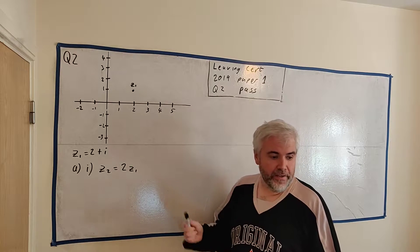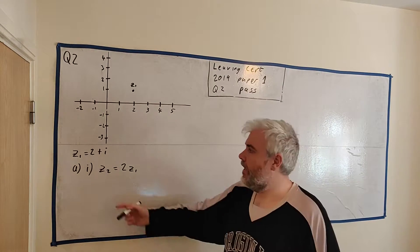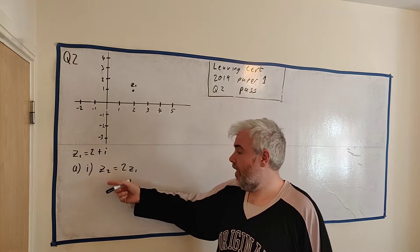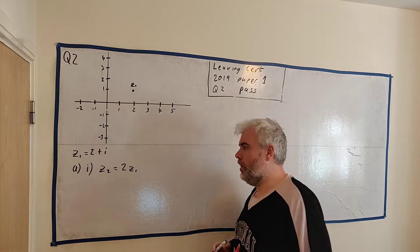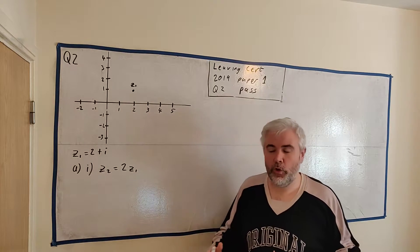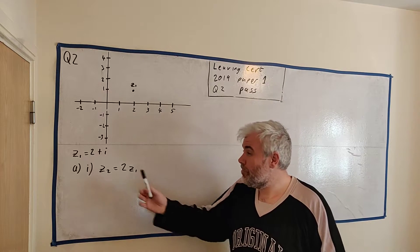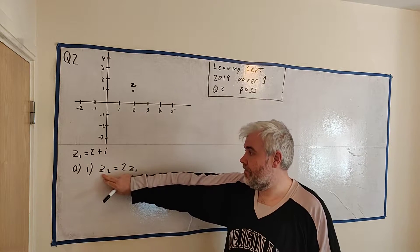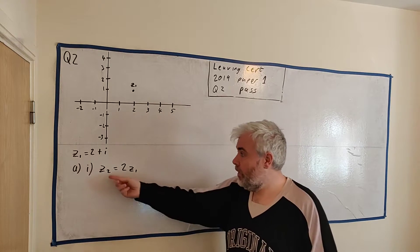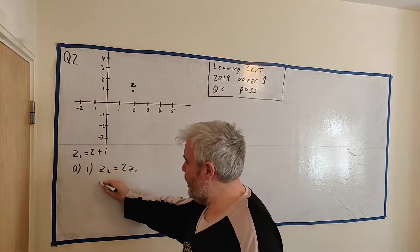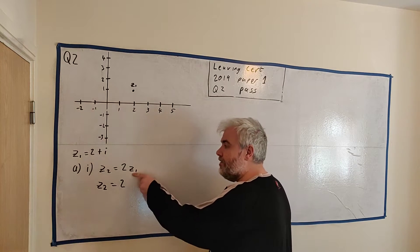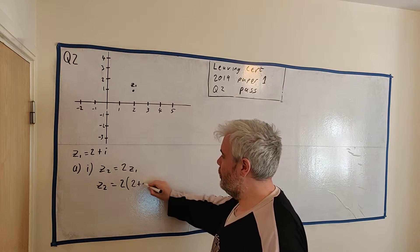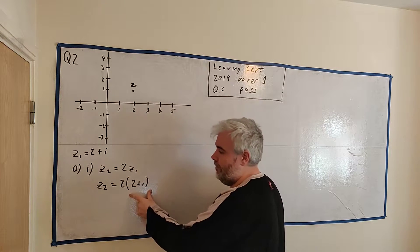Okay, here I have on the board I've jotted down all the relevant information. They gave us Z1 is equal to 2 plus i and they're asking us about Z2, telling us Z2 is equal to 2 times Z1. Lots of students get very confused because these are Z's—they work just like X's. We just tend to use Z when we're dealing with complex numbers. So let's start answering this. They ask us to find Z2 and to plot it on the diagram. Well, they tell us Z2 is equal to 2 times Z1, so we just fill in what we know Z1 to be.